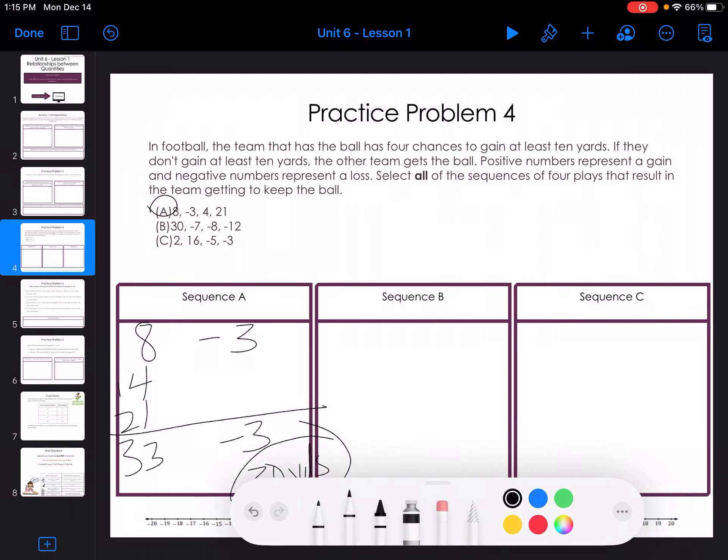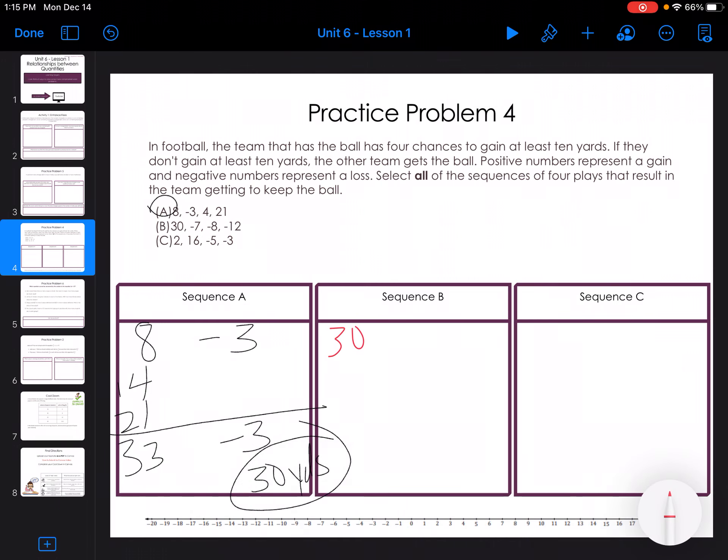So now I'm going to check B. That would be 30, negative 7, negative 8, negative 12. I'm putting all my negatives together so I can add them because they have the same sign. That's 27 negatives and 30 positives. My signs are different. I subtract and take the sign of the larger absolute value. That gives me 3 yards. So B is out.